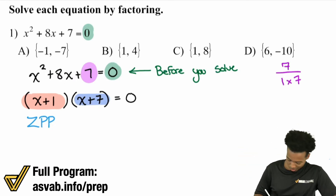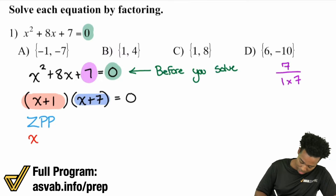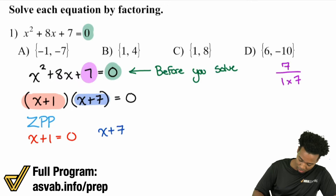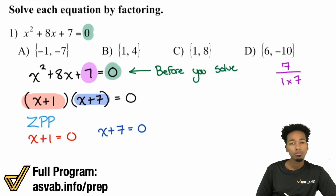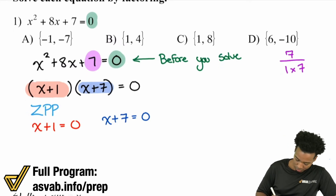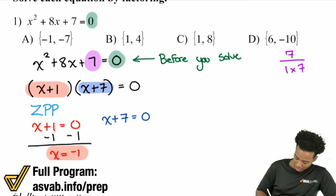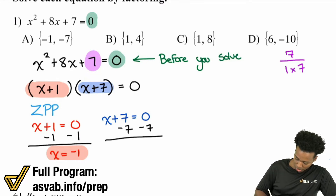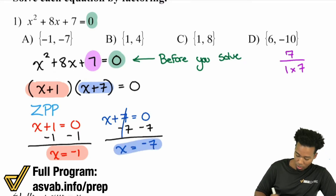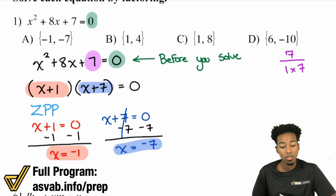So either one factor is zero or the other is zero. We're going to figure out what makes them zero so we know what x values are correct. We set x plus 1 equal to zero and x plus 7 equal to zero. Subtracting 1 on both sides gives us x equals negative 1. Subtracting 7 on both sides gives us x equals negative 7. So our answers are x equals negative 1 and x equals negative 7 — both values work.